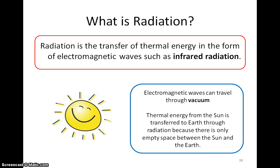Radiation is the transfer of thermal energy in the form of electromagnetic waves, such as infrared radiation. Thermal energy is being transferred via radiation from the hotter object to the cooler object by electromagnetic waves. Radiation can occur in vacuum because electromagnetic waves can travel through vacuum.